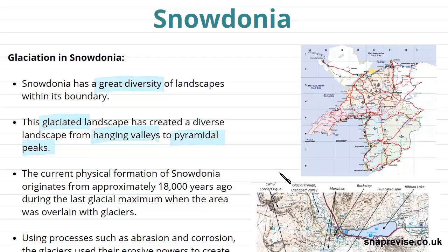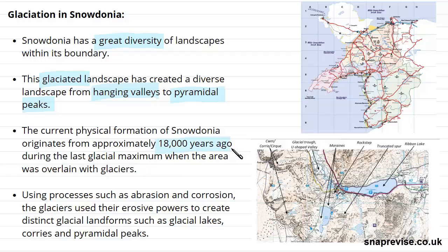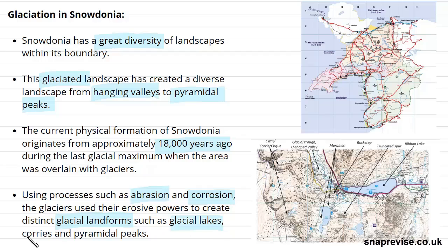The current physical formation of Snowdonia originated from approximately 18,000 years ago, which was during the last glacial maximum, when the area was overlain with glaciers. It was these glaciers that used glacial processes such as abrasion, corrosion, and other forms of freeze-thaw to create these distinct glacial landforms — such as glacial lakes, corries, and pyramidal peaks.